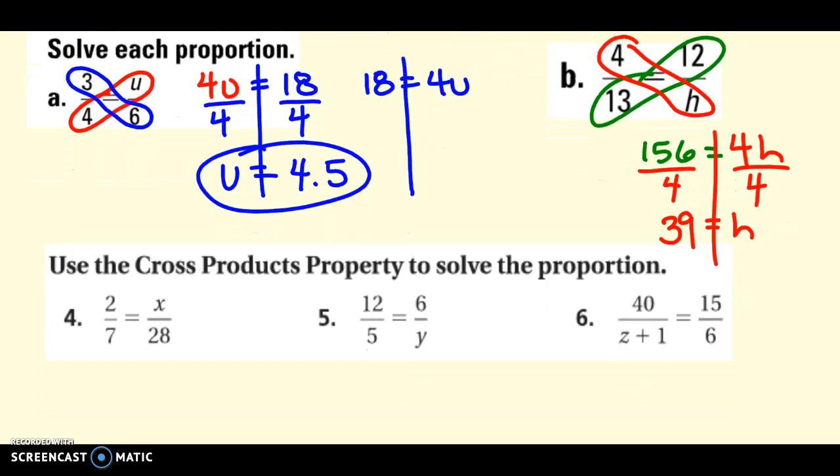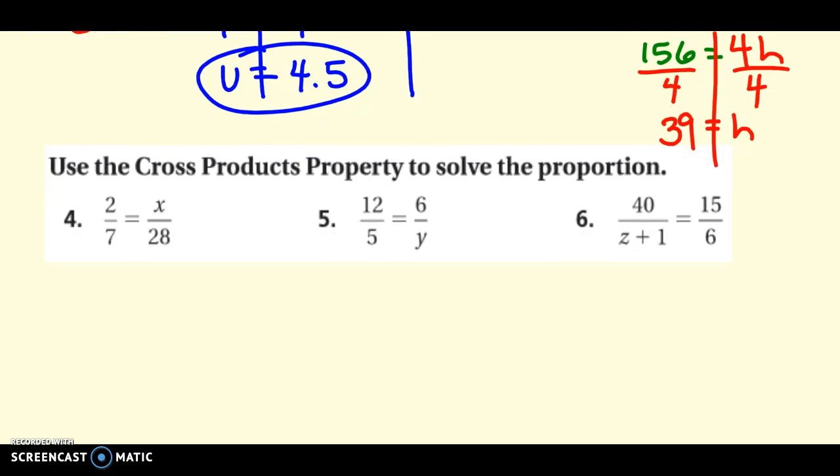So, that's cross products. Find the cross products. And then, solve for the variable. You do need to show your work. So, you do need to show the equations. Try 4 and 5 right now, and then we'll come back and talk about 6. So, pause it. See if you got it down.